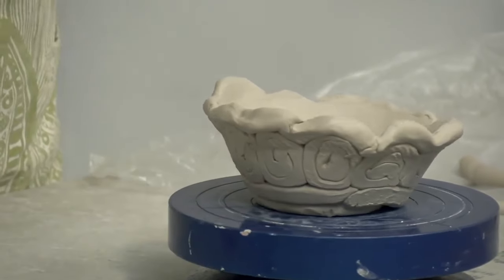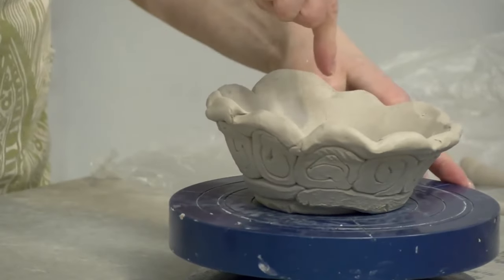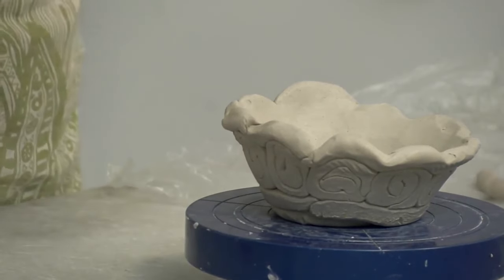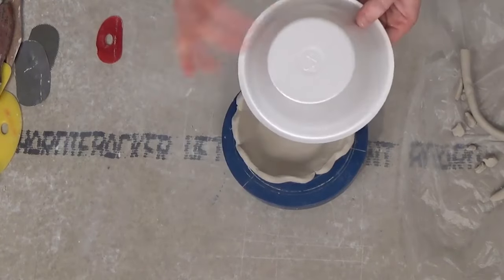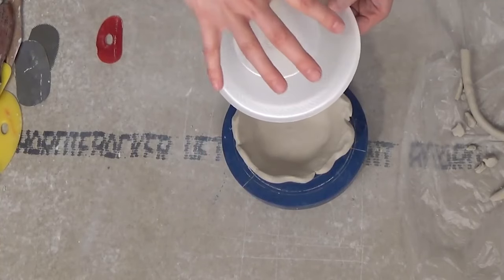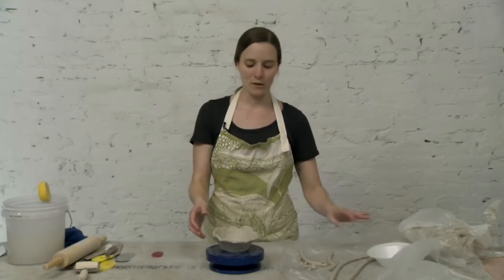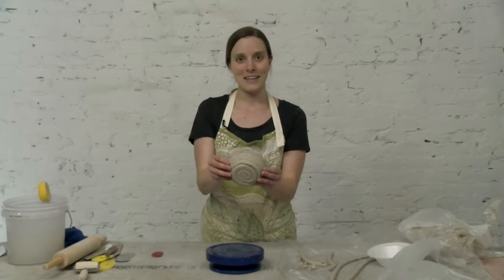If you wanted to do the opposite, say you wanted the pattern to be visible in the interior and you wanted to smooth the exterior, you could actually just work with the same form upside down. Then you would just want to smooth the outside, and when you removed it you would have that really nice coil on the inside.